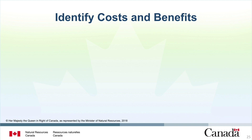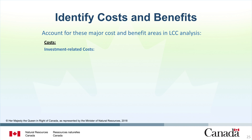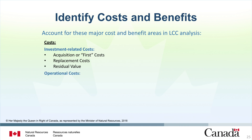Let's discuss how to identify costs and benefits. Several different costs and benefits must be taken into account in lifecycle costing analysis. Investment related costs include: acquisition costs, sometimes referred to as first costs of purchasing equipment; replacement costs, incurred when equipment is replaced during the study period; and residual value, the remaining value of the equipment at the end of the study period. Operational costs include operation and maintenance costs, repair costs for scheduled or unscheduled repairs, energy costs associated with energy consumption including electricity, natural gas, and fuel oil. Water costs are also included in this category.